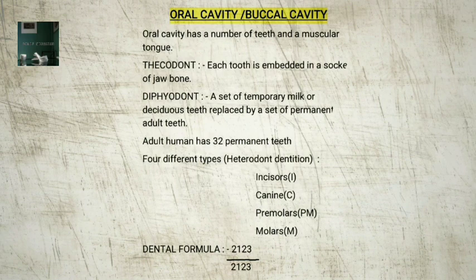The arrangement of teeth in each half of the upper and lower jaw in the order incisors, canine, premolar, molar is represented by a dental formula, which in humans is 2.1.2.3 / 2.1.2.3.